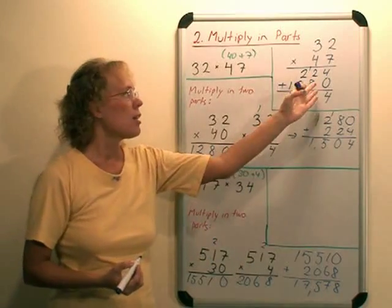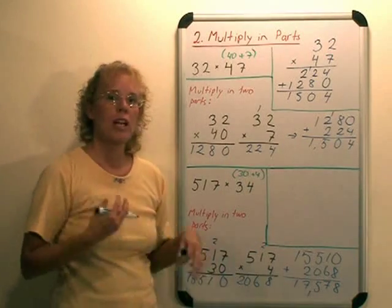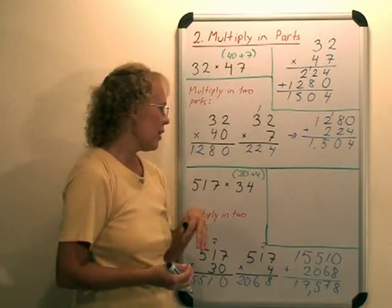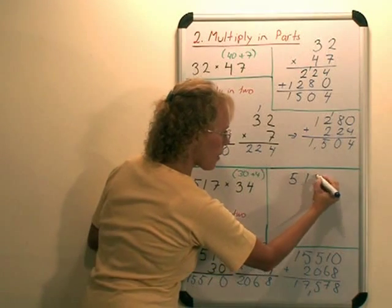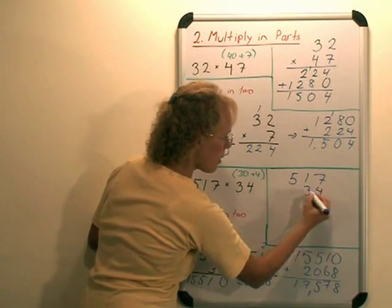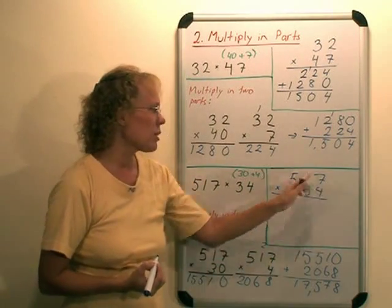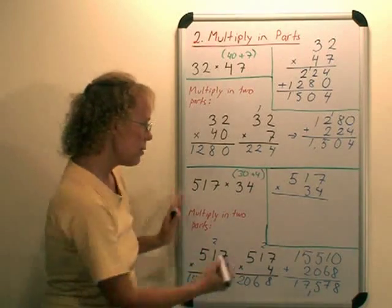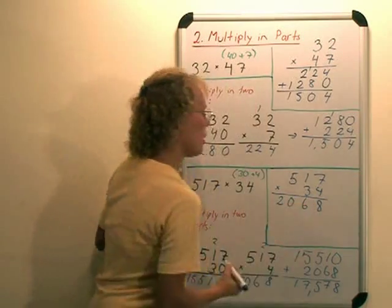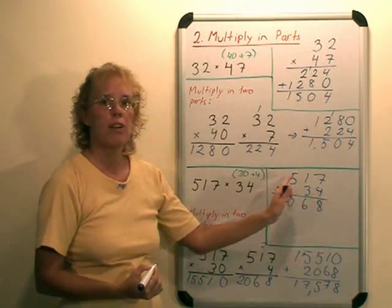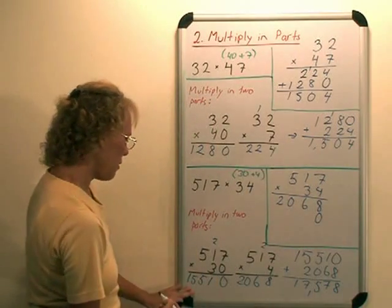But it is essentially the same as these three parts here, and it should be now easy for students to see. And similarly here, I'm going to take the same problem. In the standard algorithm, we go first 4 times 517, which is here already done. And then we go 30 times 517, and students are told to put the zero here and then go 3 times that. We have here our result already.